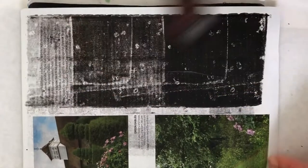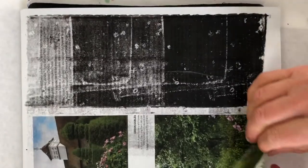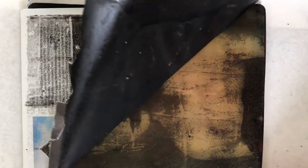I'm rolling it over again to make sure it's down. And then I lift it up. And voila! I have the image transferred onto the jelly plate.